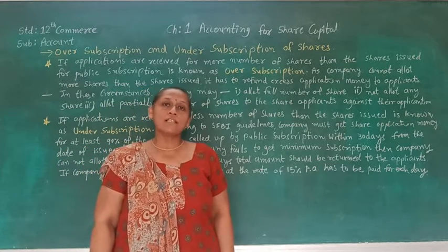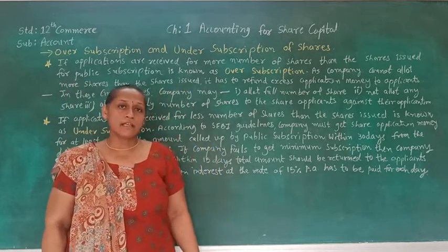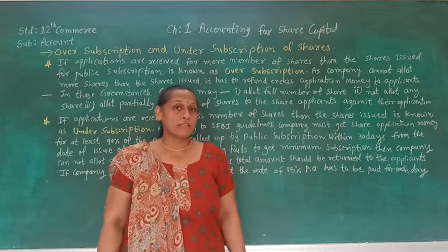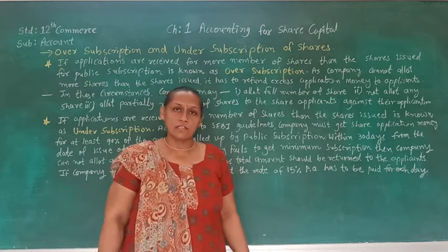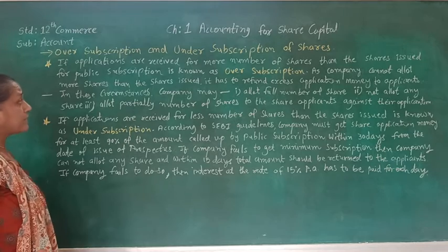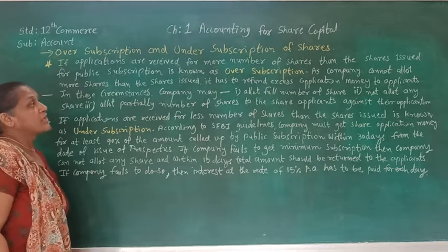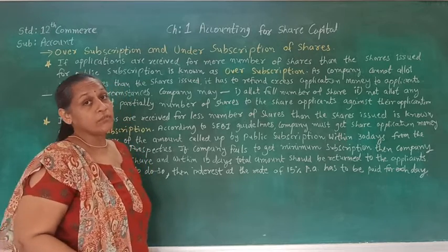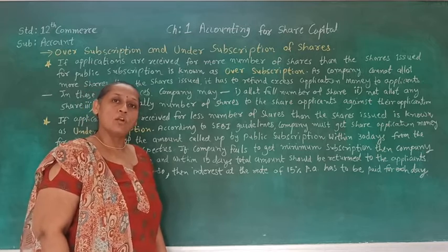Let's see over or under subscription of shares. As we know, the company can ask for subscription from the public. When the company is asking for public investment, there is a possibility of over and under subscription. Over subscription means if applications are received for more number of shares than the shares issued for public subscription, that is known as over subscription. So if we have received applications for more shares than what was issued, it is called over subscription.